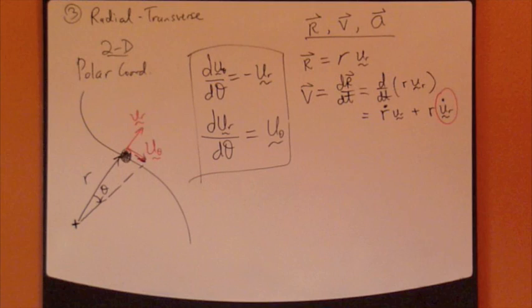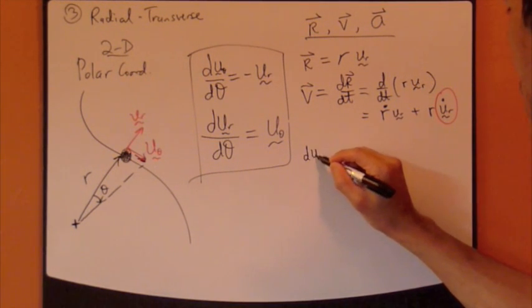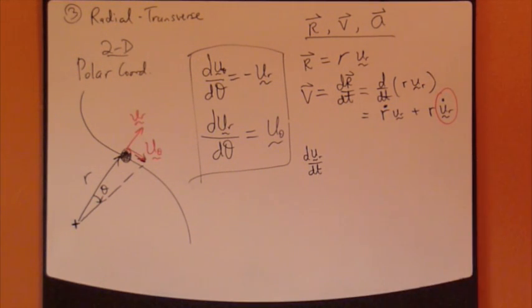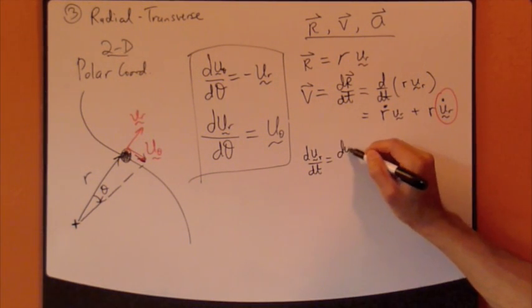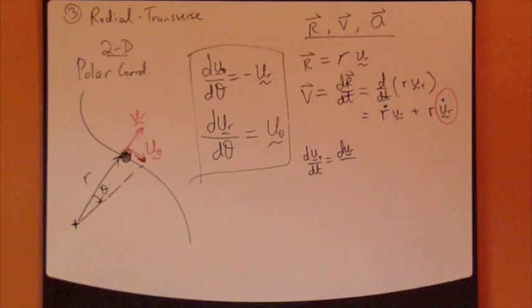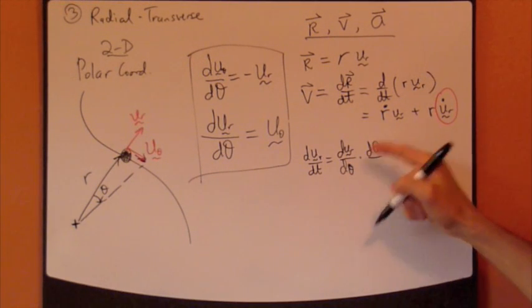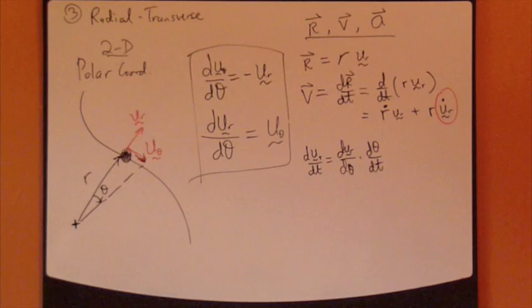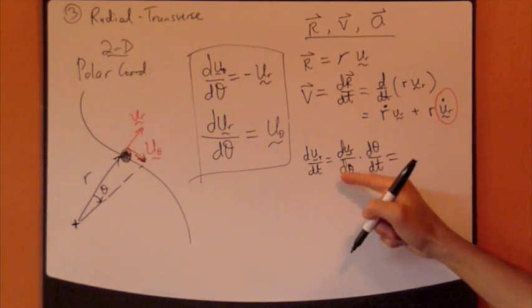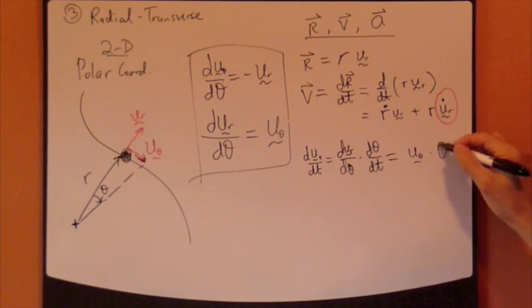u_r_dot, how do you take care of that? Well, let's see, this u_r_dot is exactly du_r/dt. Let's do some mathematical trick. I can multiply something and divide by something by the same thing. So I'm not really doing anything different. So I'm going to multiply the numerator and denominator by dθ.